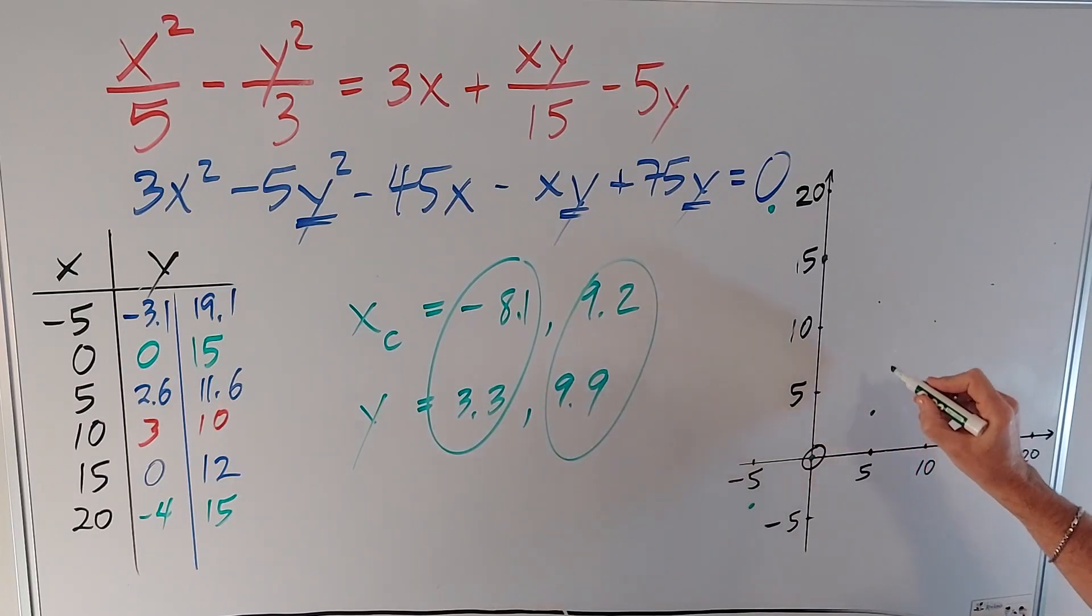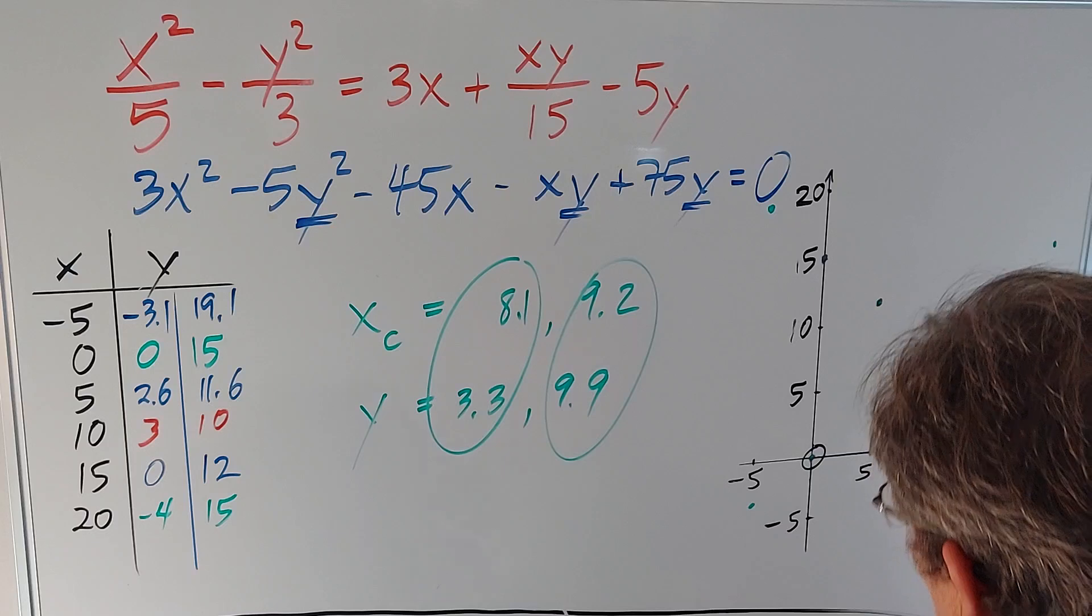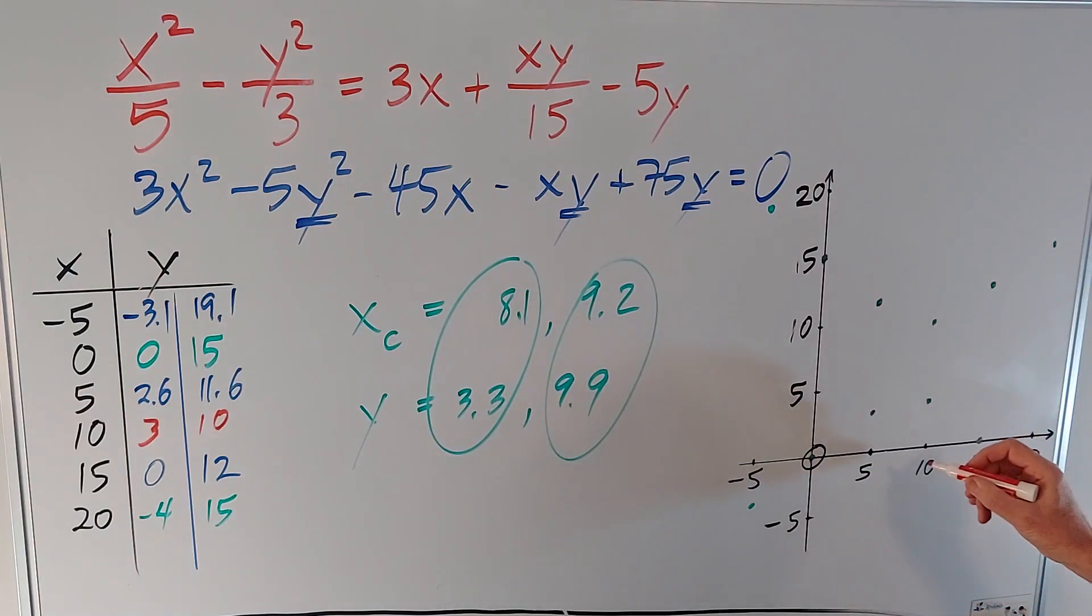Here, and here. Here, and here. About there, and here. And then I'll do the critical points in a different color. One thing here. I think there should be positive 8.1. Sorry about that. So, that would be about here.